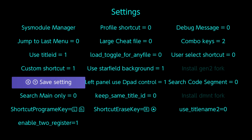Push the shortcut erase key combo keys to erase the shortcut. To assign a one button shortcut, push ZL plus L, then push the same button 2 times.